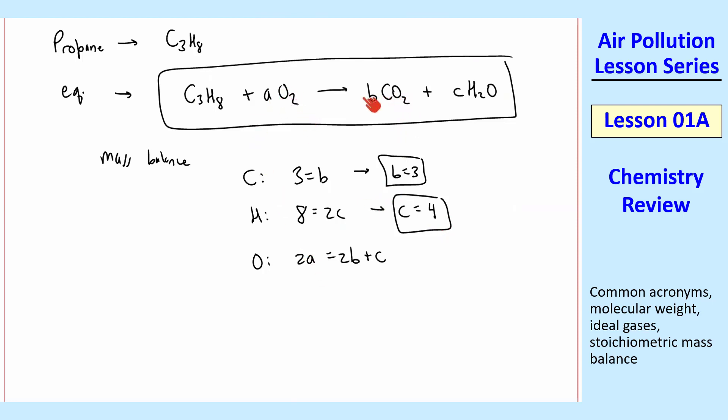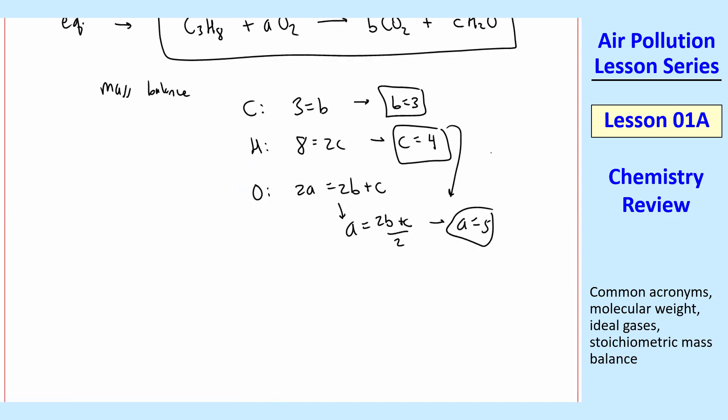And then for O, we have two A's, we have two B's, and we have one C, so you can write it out that way. And when you solve this, you can solve this for A. So A equal 2B plus C over two. Plug in these guys, and you get A equal five.